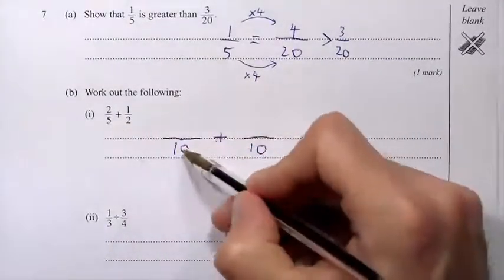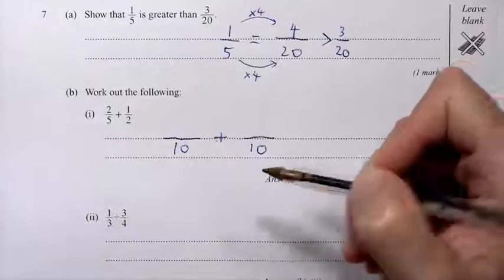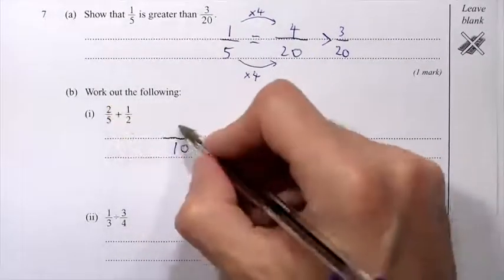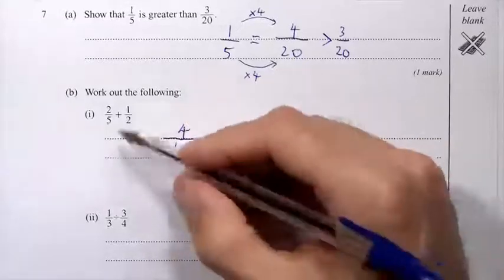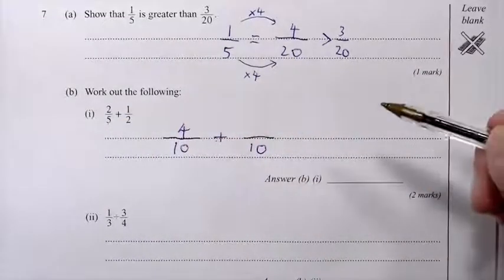Well, to get from 5 to 10, you times by 2. And do the same thing to the top. So 2 times 2 is 4. So 2 fifths and 4 tenths are the same thing.